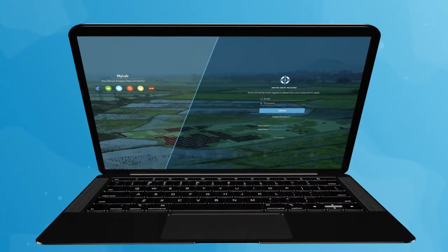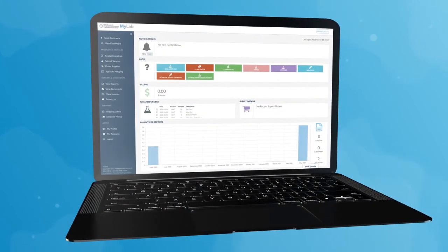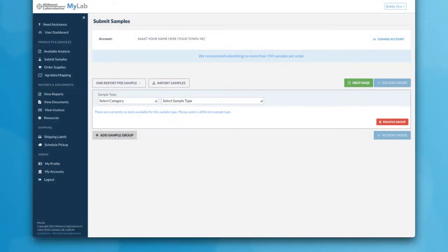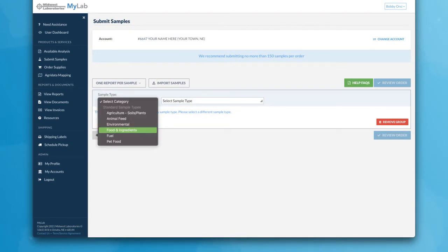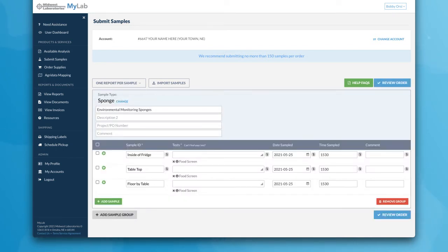To submit your sample paperwork we recommend using the MyLab portal. Select submit samples. Choose your first category as food and ingredients and select your sample type as either sponge or swab.